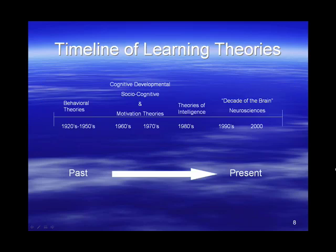In this course, we'll begin with the present and then go back in time. So we'll start our focus with the Decade of the Brain and the Neurosciences, and then go back in time to study behavioral theories, cognitive developmental and social cognitive theories, as well as theories of motivation and intelligence.